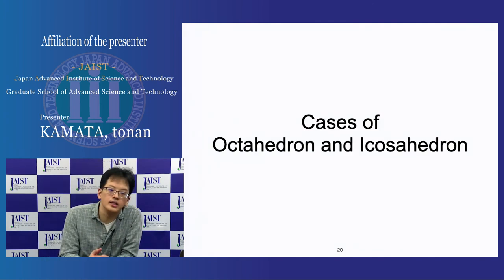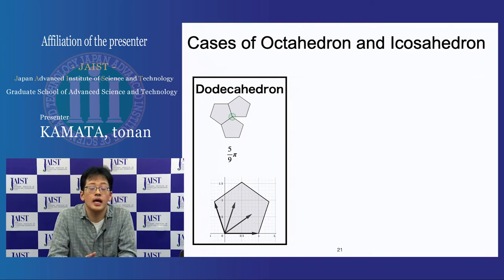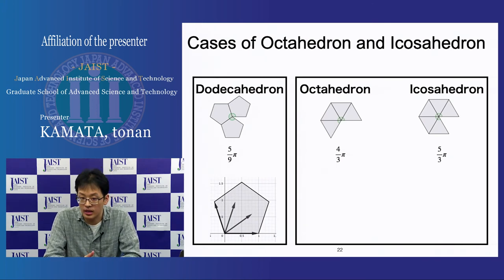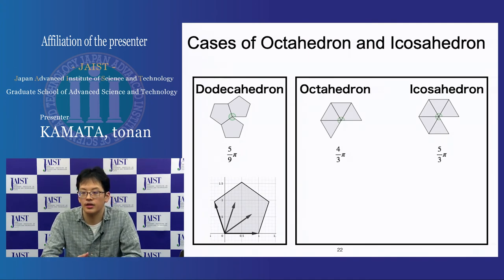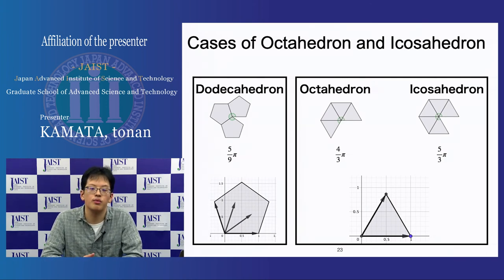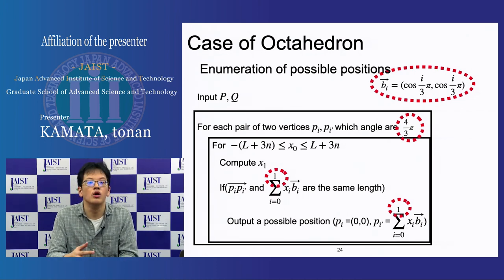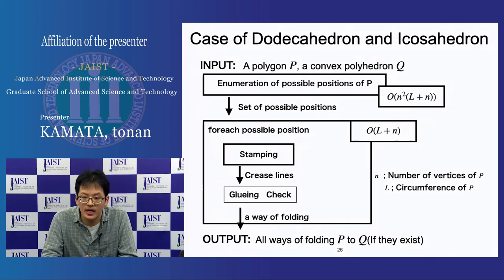The next topic is the case of the octahedron and icosahedron. The idea used for the dodecahedron can be extended to the octahedron and icosahedron. A vertex cut at a leaf makes a 4π/3 angle in the octahedron case. In the icosahedron case, a vertex cut at a leaf makes a 5π/3 angle. A vector connecting these points is given by a simpler expression. By some modification of the enumeration of possible positions, we can apply our algorithm to the octahedron and icosahedron cases.